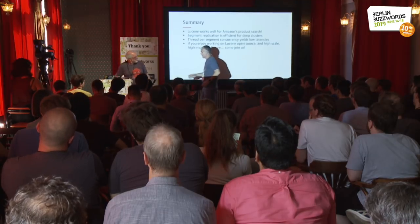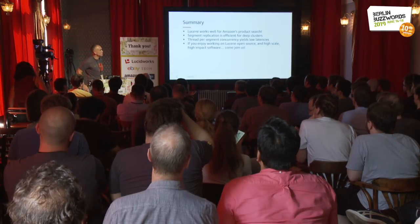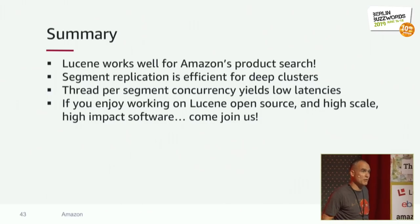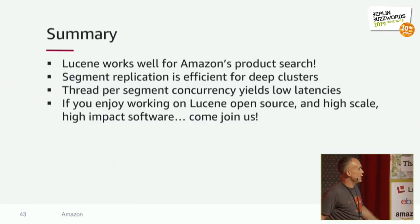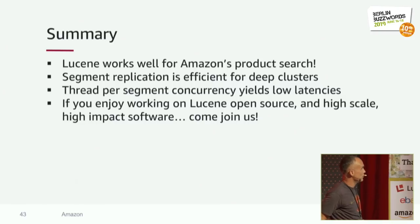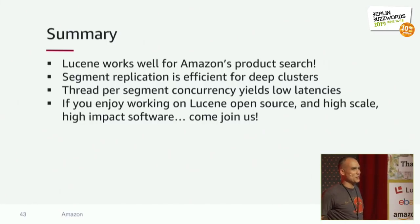To wrap up: it turns out Lucene can handle this search application. It's been really challenging — we're using all kinds of features and pushing changes back upstream, but it's working really well. If you go and search on amazon.com today, you're using Lucene sometimes — it's not 100% out there yet. Segment replication is incredibly efficient if you have a deep replica count — something I hope Elasticsearch will offer someday. Using multiple threads to handle one query is incredibly important if you care about latency and aren't always running at redline. Come join us if you like working on open source on really challenging high-scale search problems — we are hiring.